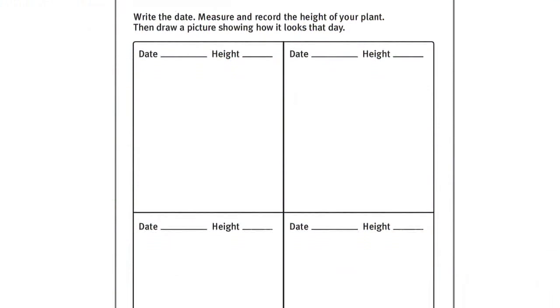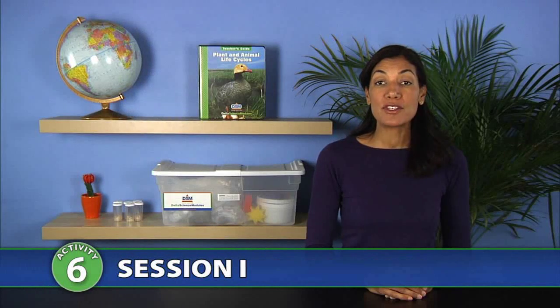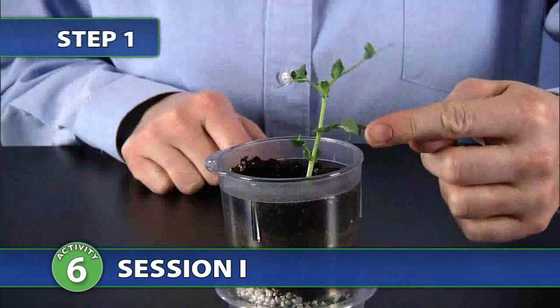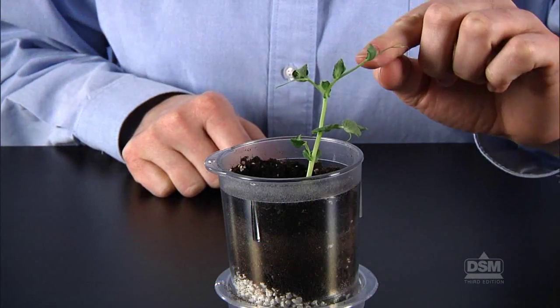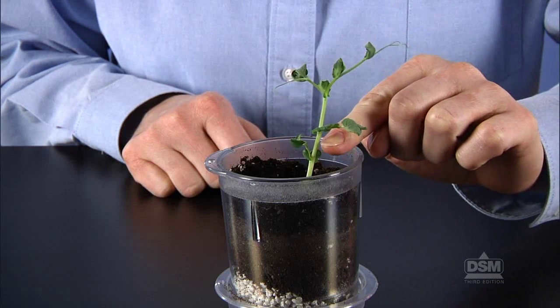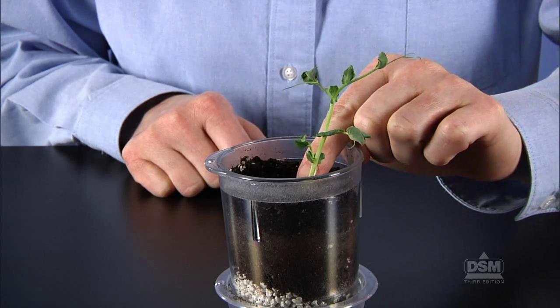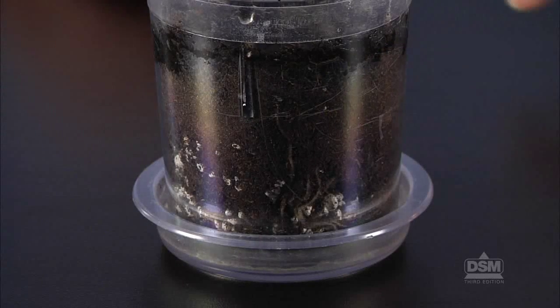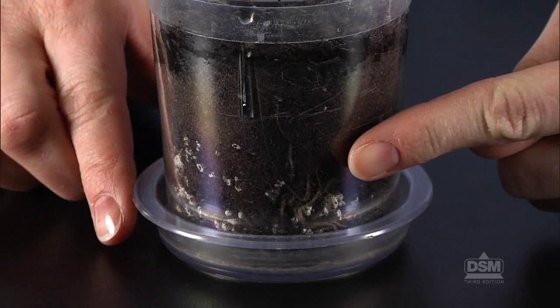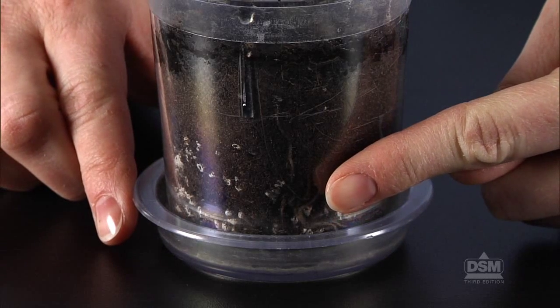To prepare for Session 1, make 3 or 4 copies of Activity Sheet 6 for each student. To begin Session 1, have the students bring their pea plants from Activity 2 to their desks and observe the plants. Give them time to locate and identify the leaves and stems. Note that although the roots are located under the soil, they should be visible along the inside walls of the planter cups.